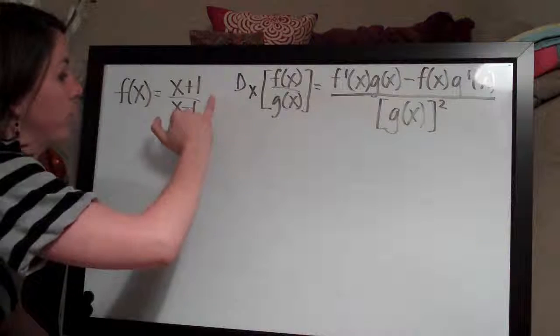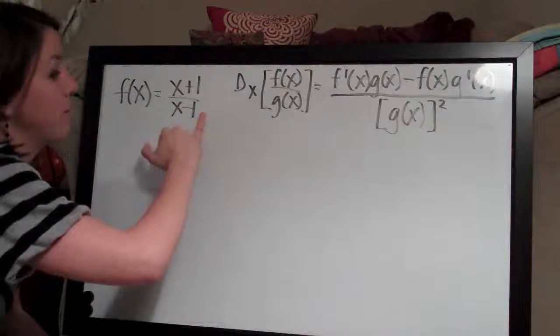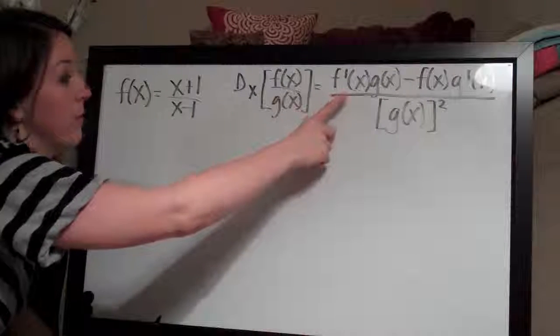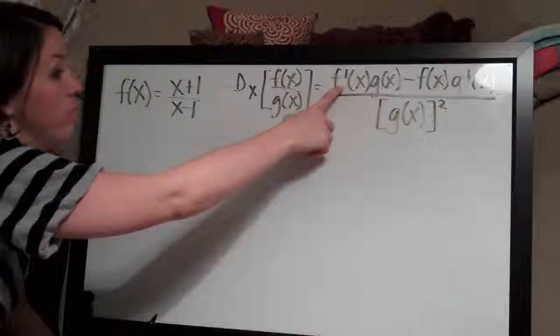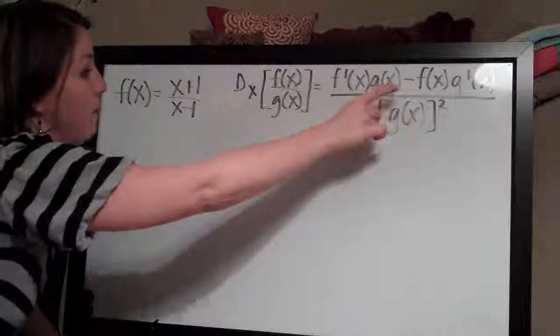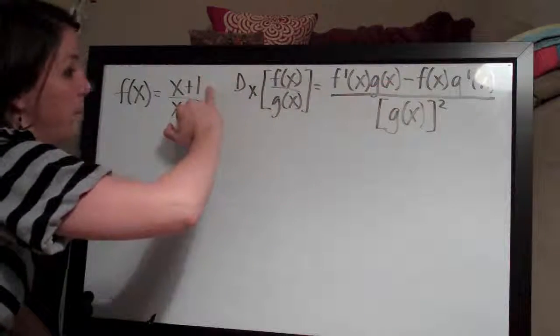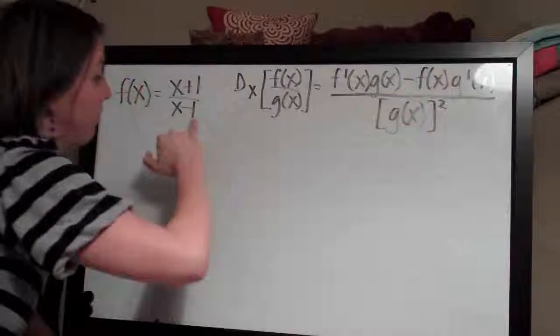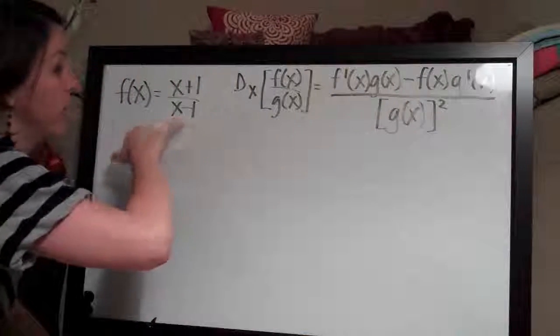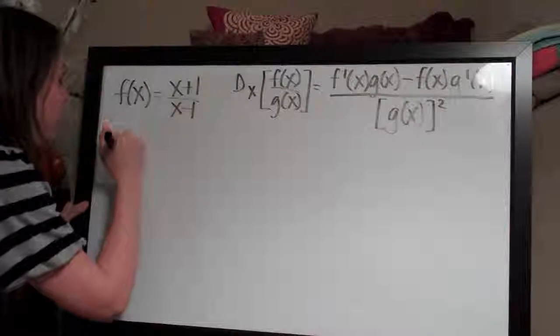And so in order to take the derivative of this function, we can use this rule and apply this formula. We'll say the derivative of the top times the bottom minus the top times the derivative of the bottom divided by the bottom squared.